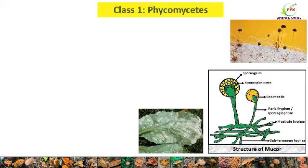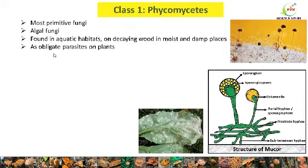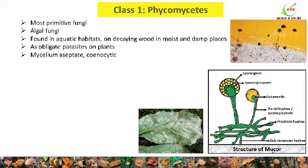The first class is Phycomycetes. Phycomycetes are generally considered to be the most primitive type of fungi. These fungi have morphological similarity with algae, and so for a long time they were considered as algal fungi. These fungi are found in aquatic habitats, on decaying wood, and in moist and damp places. Some members of class Phycomycetes are obligate parasites on plants, algae, animals like fish and insects, and some are saprophytic. The vegetative phase has profusely branched, aseptate, and multinucleated mycelium — as seen in the structure of Mucor, where the hyphae are aseptate and coenocytic.